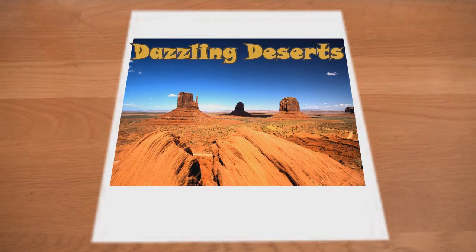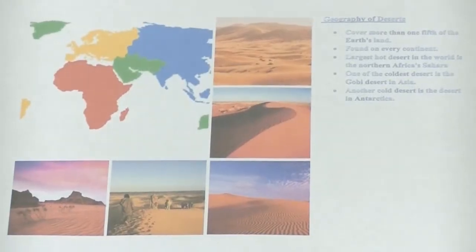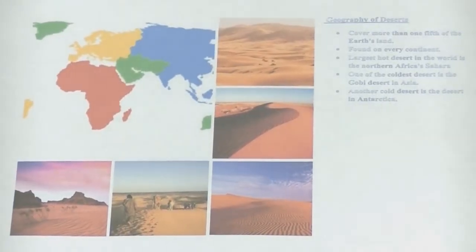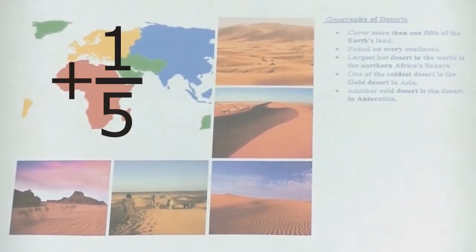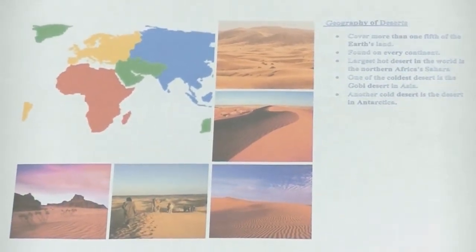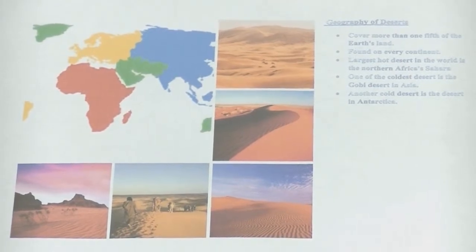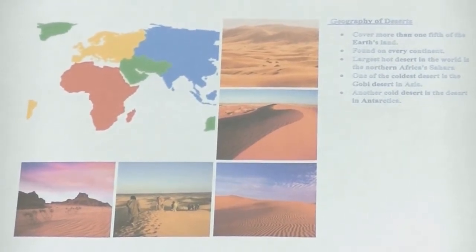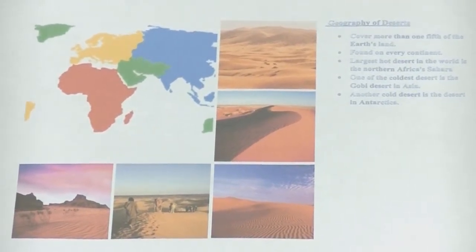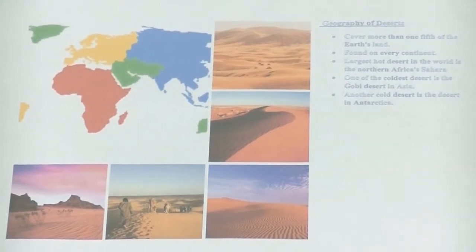Dazzling Deserts. The Geography of Deserts: they cover more than one-fifth of Earth's land, found on every continent. The largest hot desert in the world is the Northern Africa Sahara. One of the coldest deserts is the Gobi Desert in Asia. Another cool desert is the desert in Antarctica.